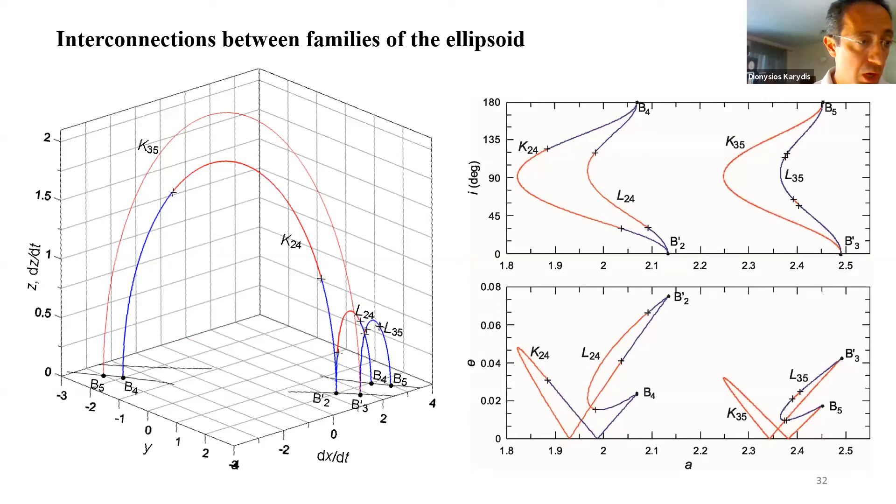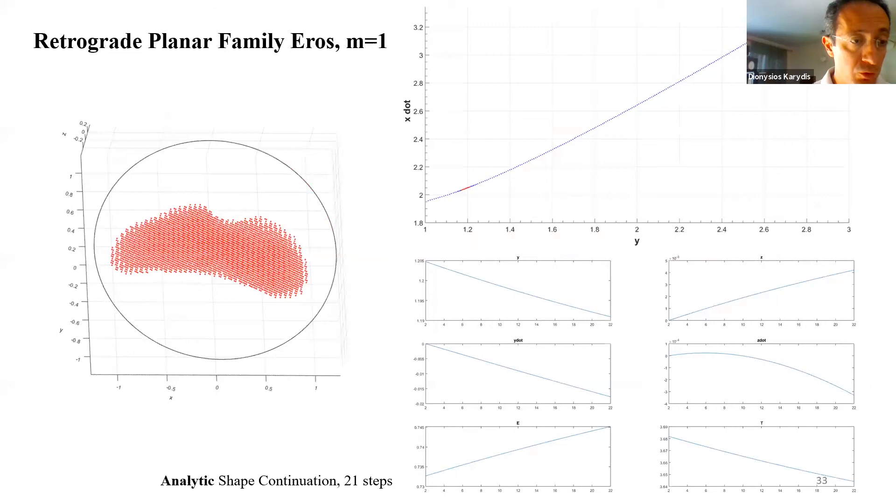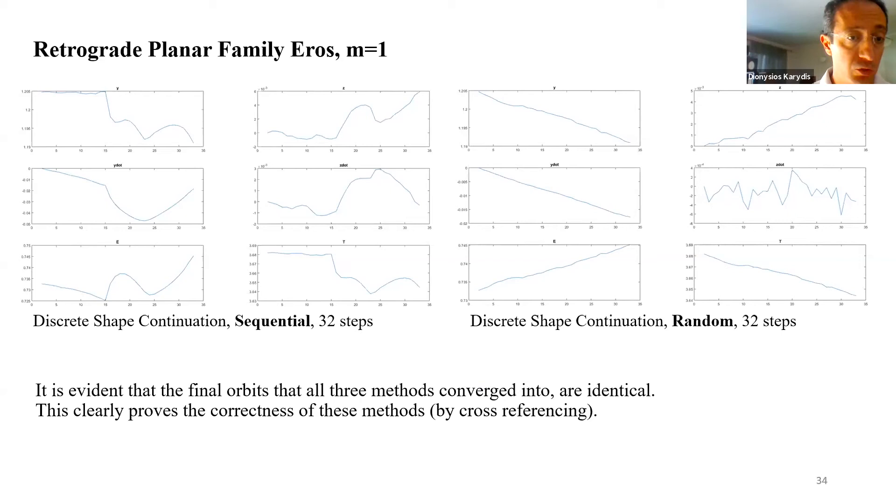We will now present some families of periodic orbits of Eros beginning with the smallest multiplicity and for a retrograde kind of movement. We can see that almost everywhere the family is fully stable. The shape continuation that was applied here was analytic and only 21 steps were used. For the same family, we can see the two ways of the discrete shape continuation. The one with the sequential change of mass cons in the intermediate models and the other with a fully random change. It is evident that the final orbits that all three methods converged into are identical. This clearly proves the correctness of those methods.